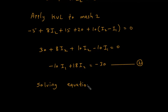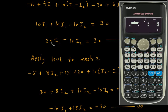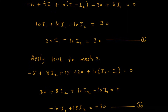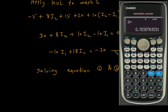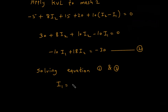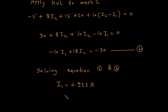Now solving equations 1 and 2 simultaneously. From equation 1: 20I1 minus 10I2 equals 30. From equation 2: minus 10I1 plus 18I2 equals minus 30. Solving these, we get I1 equals 0.923 ampere and I2 equals minus 1.153 ampere.